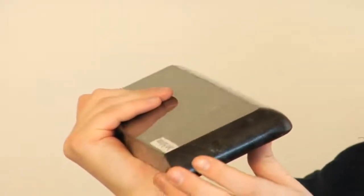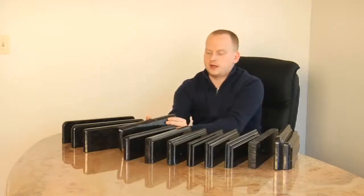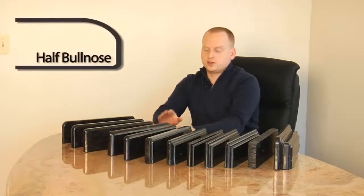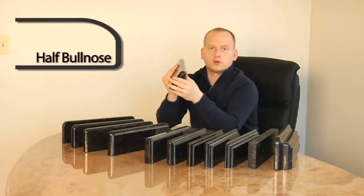Now, all of the bullnose are just basically very round, soft edges. Another variation of that edge would be a half bullnose, which is a little bit skinnier than that. And then also the full bullnose.